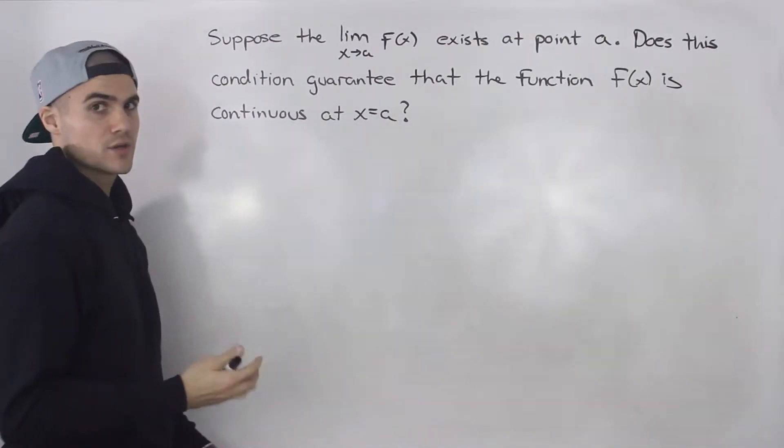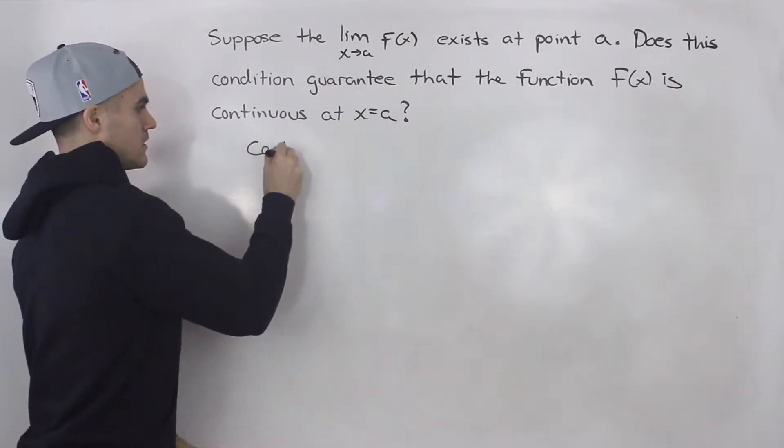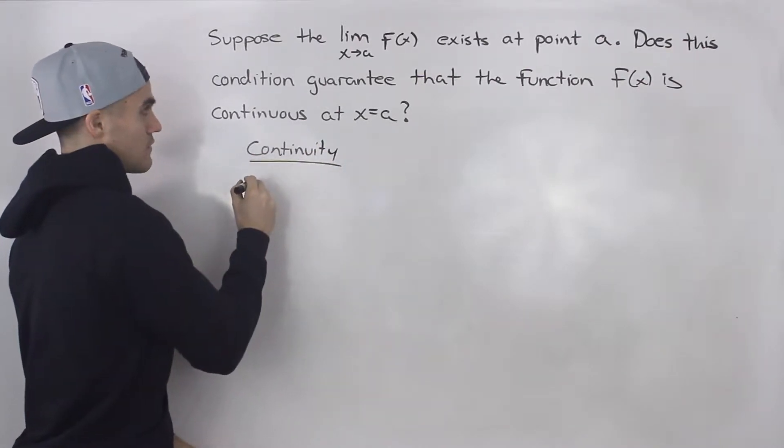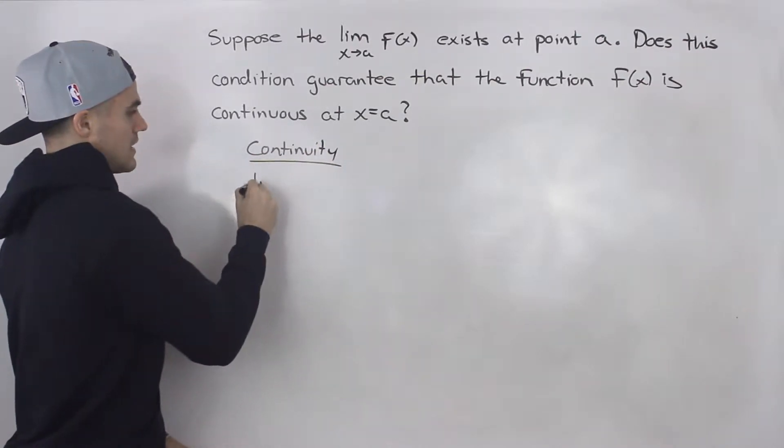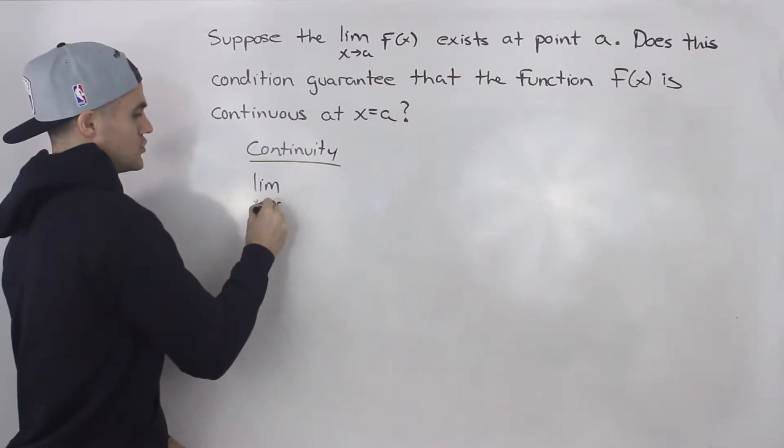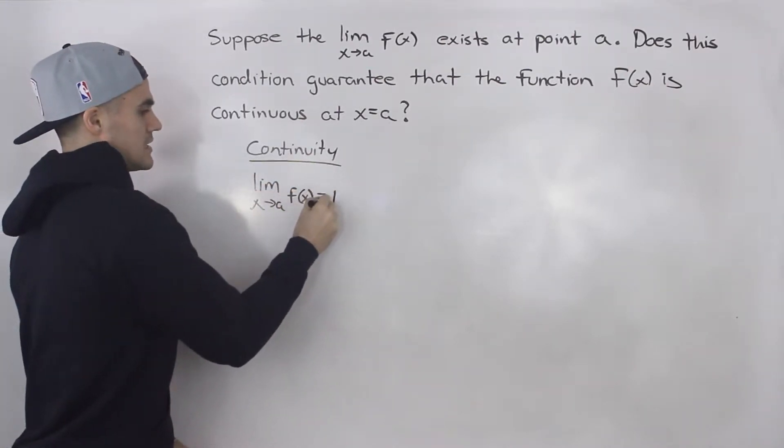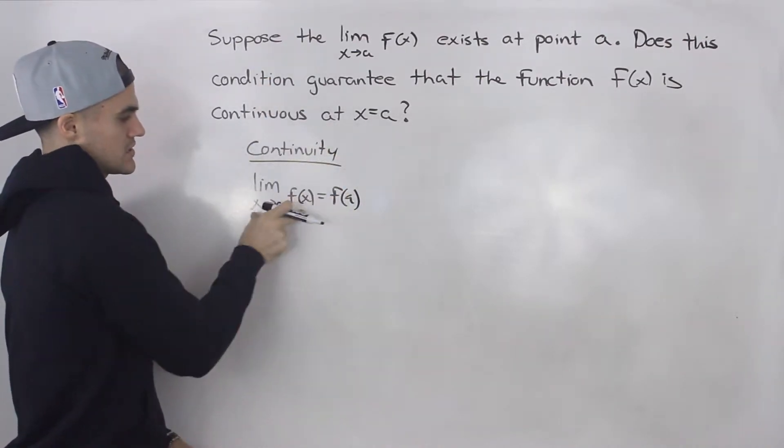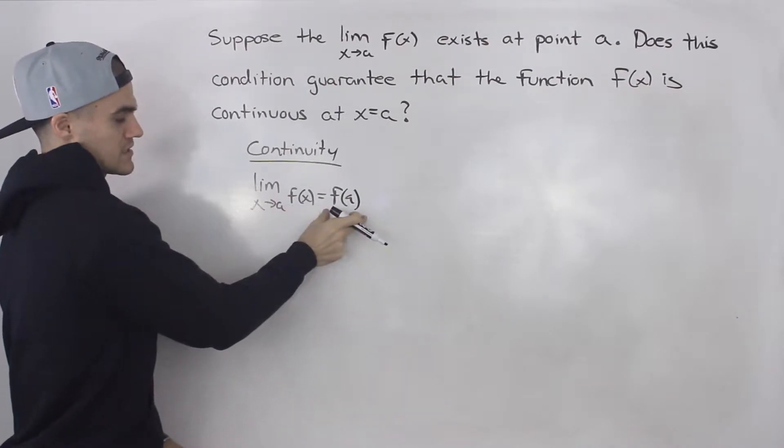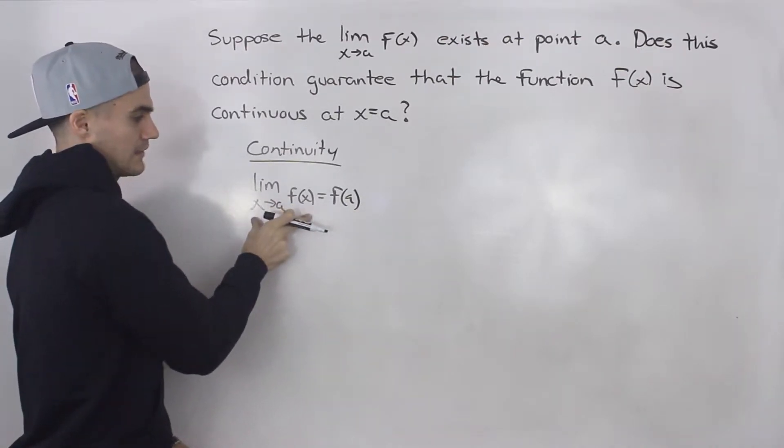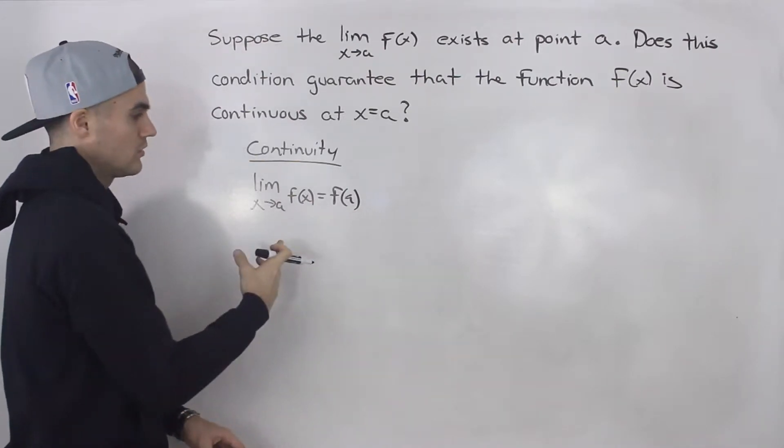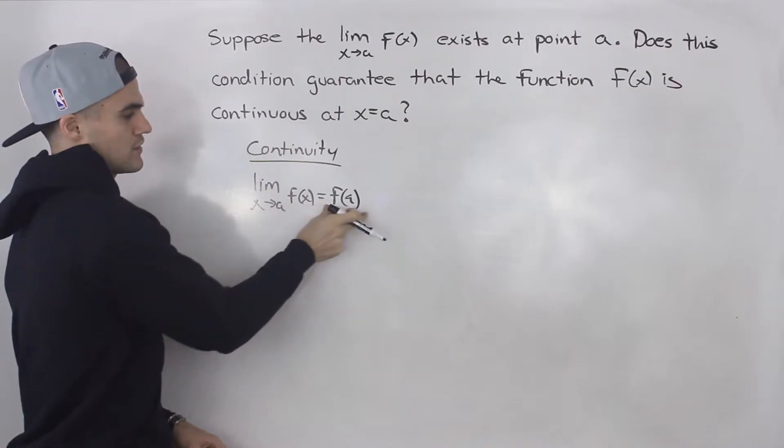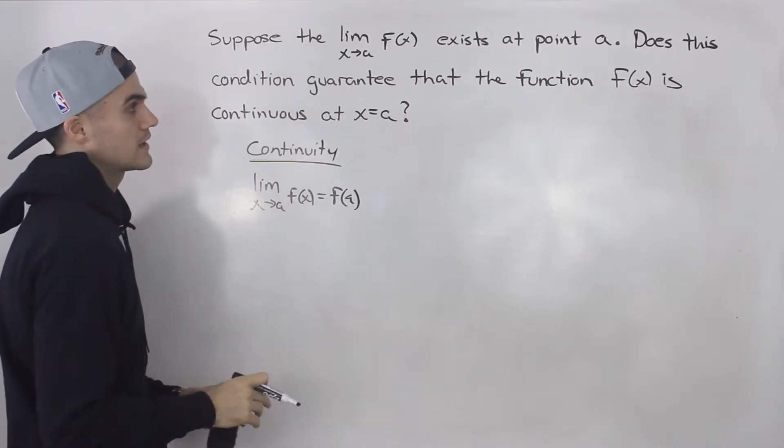Now if you remember from the lecture videos on continuity, we basically said or concluded that a function is continuous if the limit as x approaches a of a function is equal to f of a. There are actually two other conditions: this limit exists, f of a exists, and then this was the third condition. That limit and f of a are equal, but the third condition pretty much implies the other two because if both of these are equaling, then it means that both of those are existing.